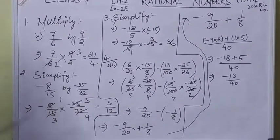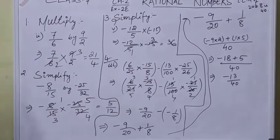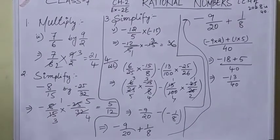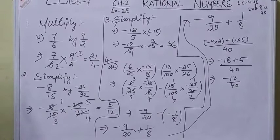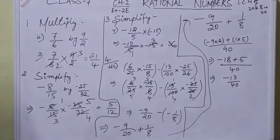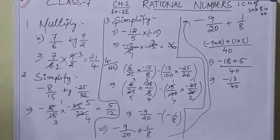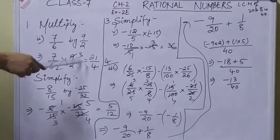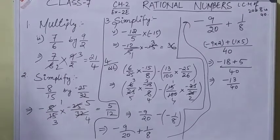When we are multiplying fractional numbers or rational numbers, we must remember that we can only cancel the numerator and denominator. We cannot cut them horizontally, we need to cancel them vertically.